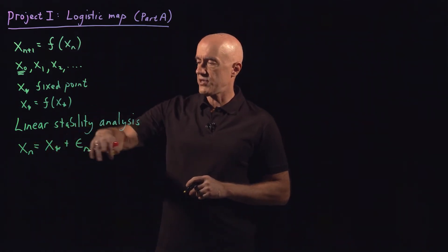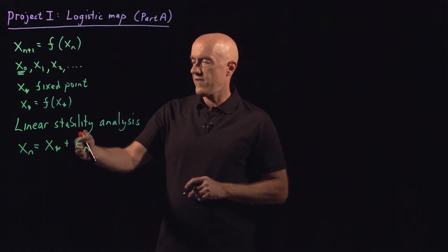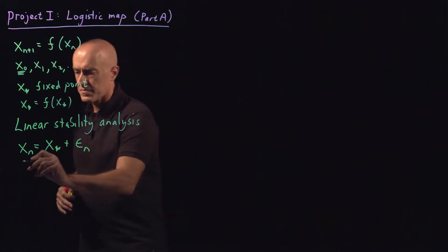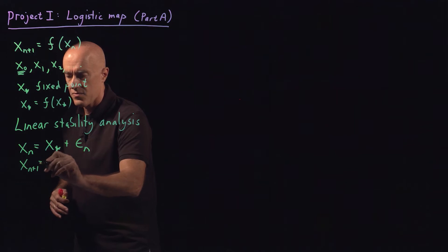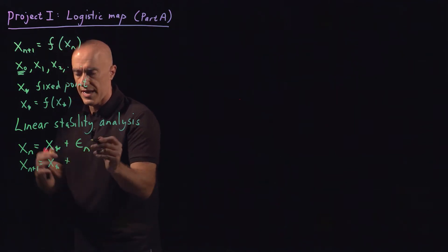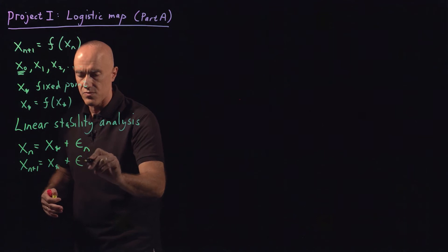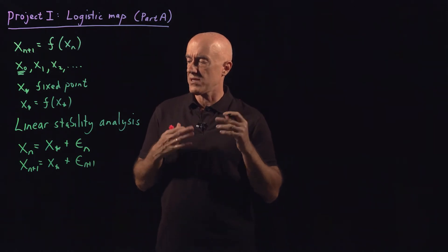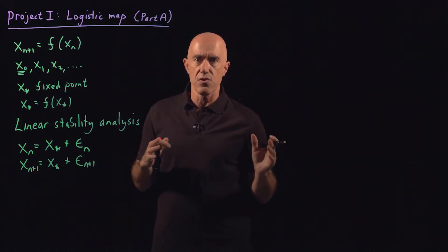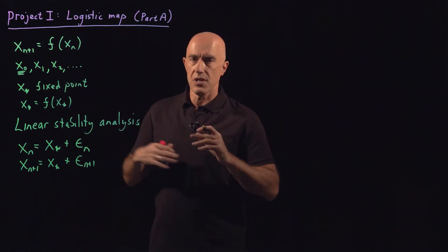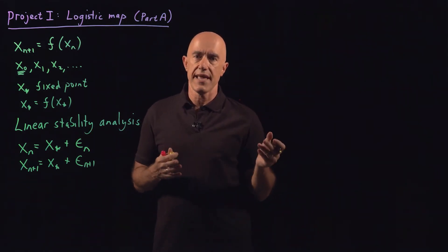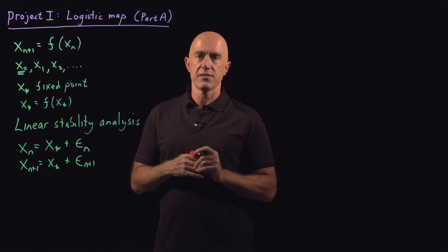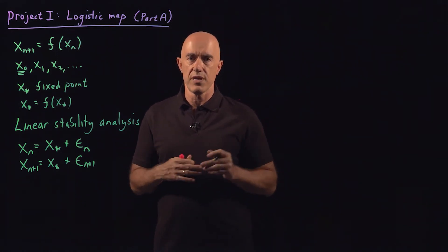At the nth iteration we're just a little bit away from the fixed point, and we want to see how x_{n+1} behaves. So x_{n+1} would be x star plus epsilon_{n+1}. If epsilon_{n+1} is moving further away from the fixed point than epsilon_n, then the fixed point is unstable. If epsilon_{n+1} is decreasing the distance to the fixed point, then the fixed point is stable.